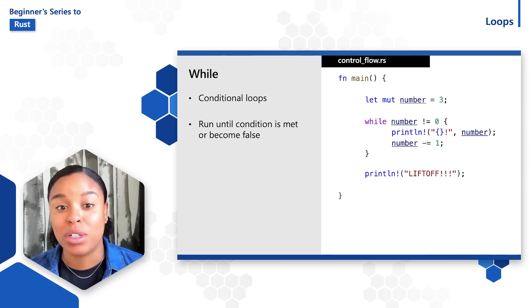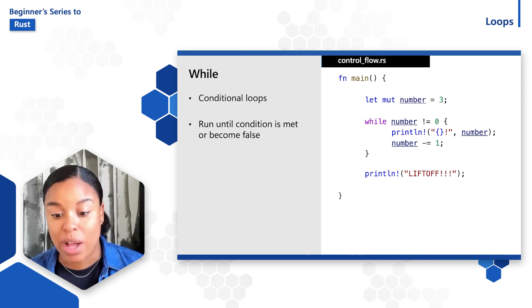A simple while loop looks like this. Let immutable number is equal to three. While the number is not equal to zero, we're going to print out the number and then decrement the number by one. We're going to go through this while loop until the number is equal to zero. And that's when we will break out of that loop and continue on to the next line where we'll print out lift off to the output window.